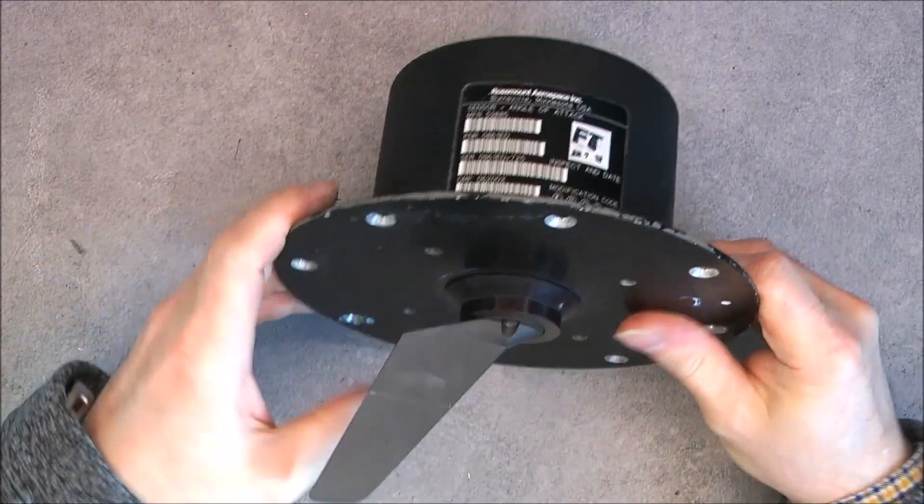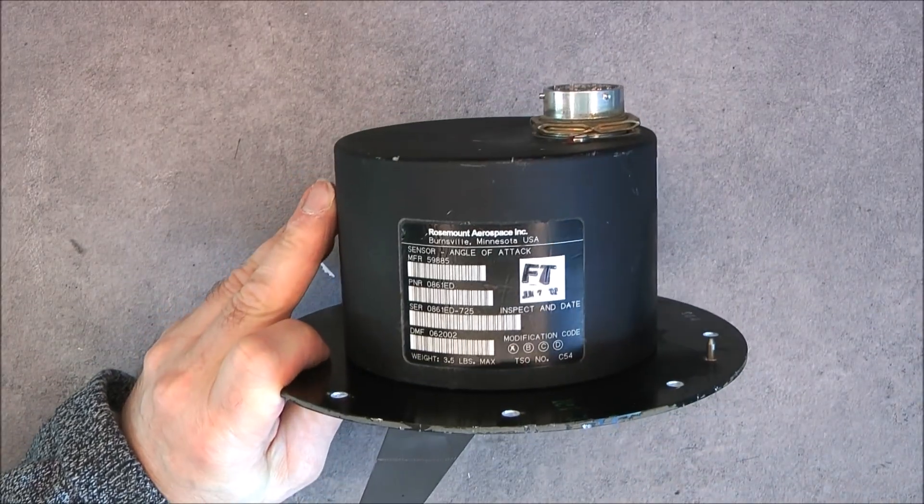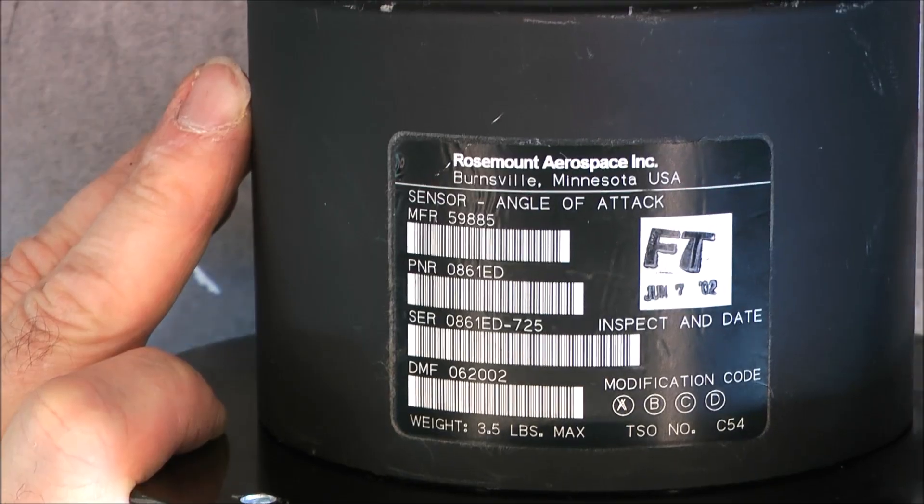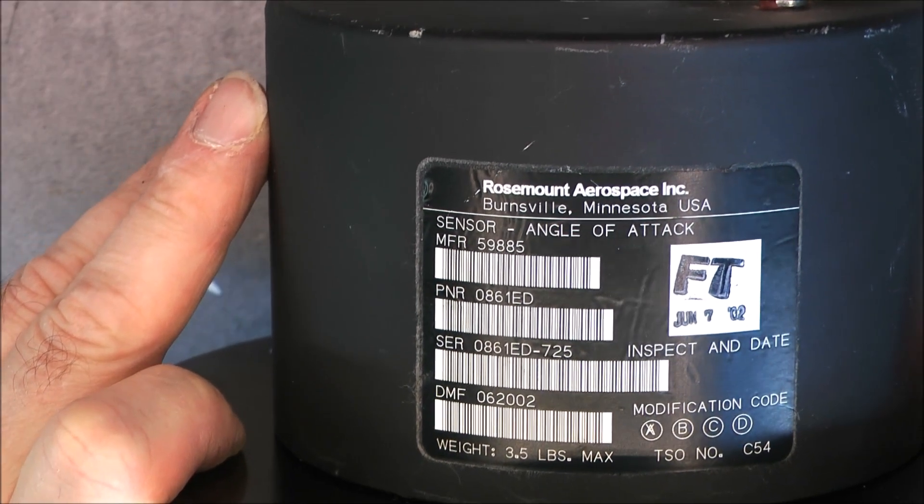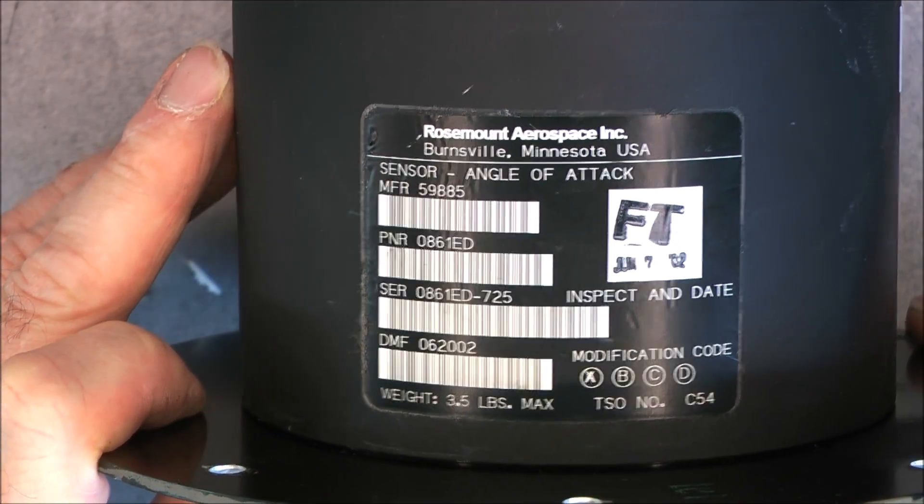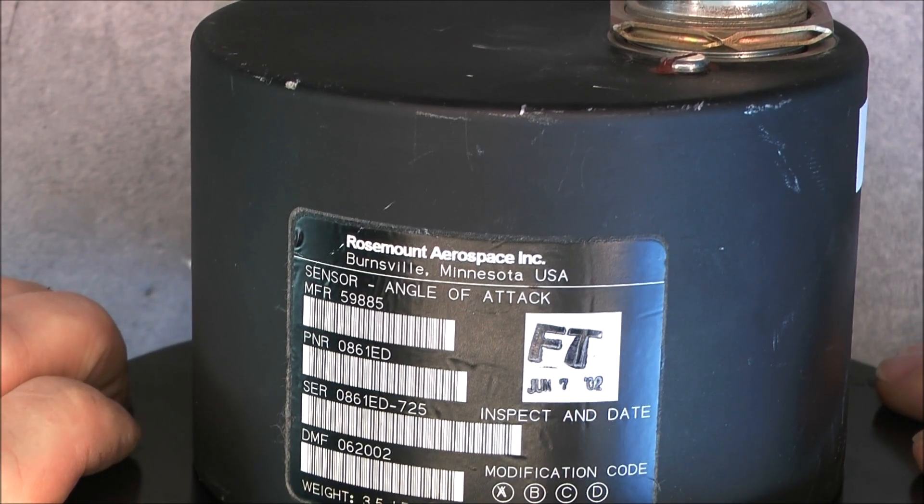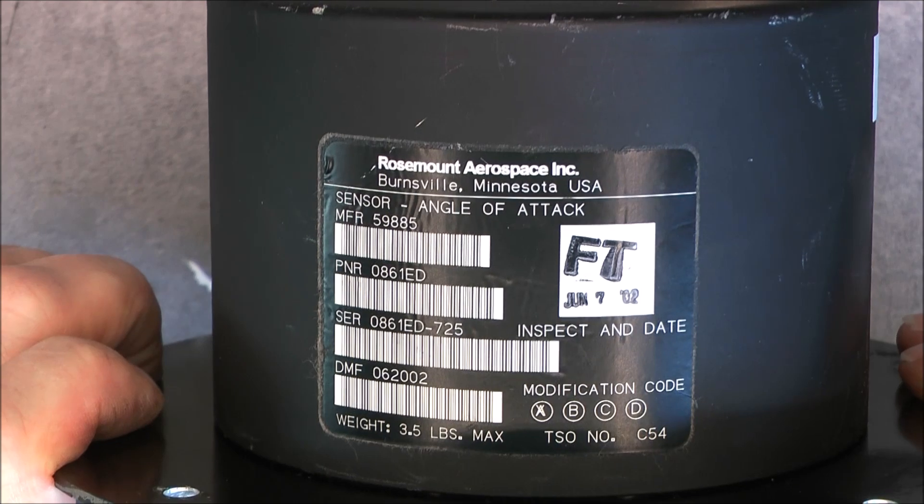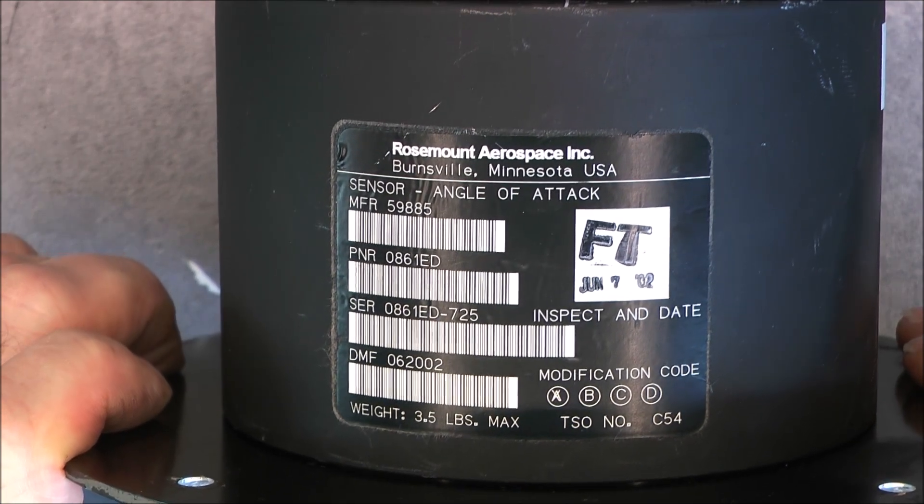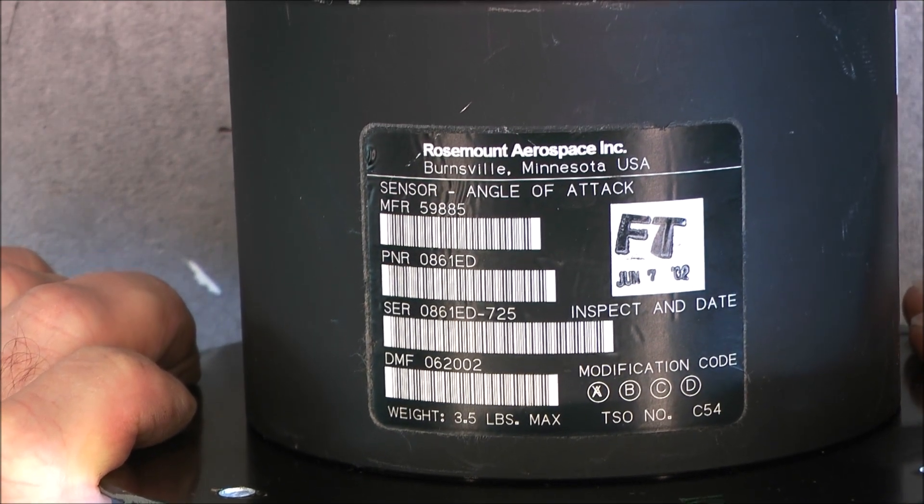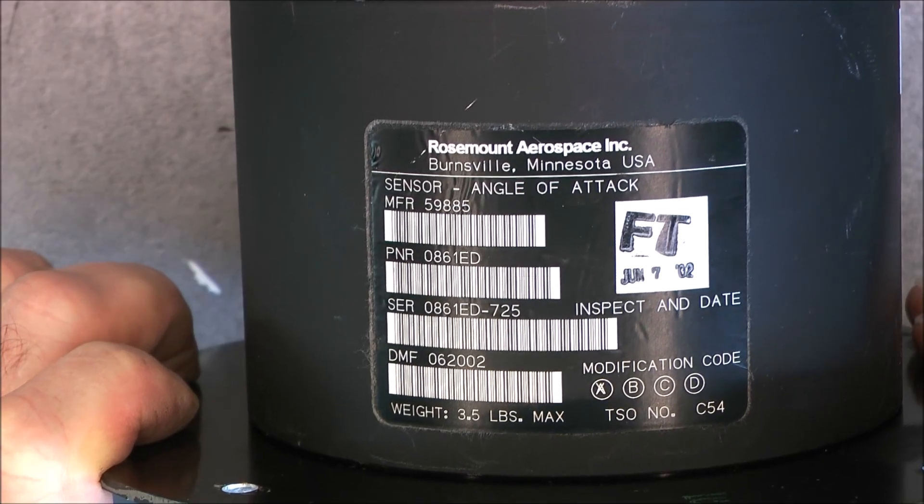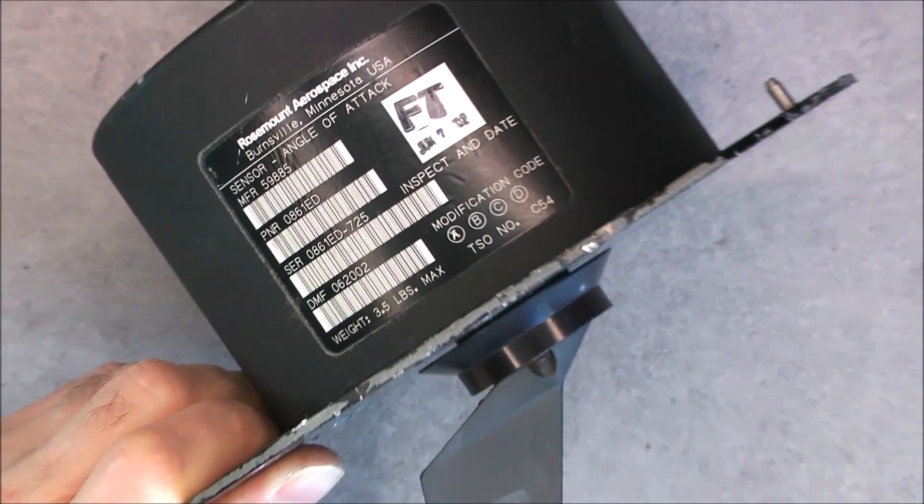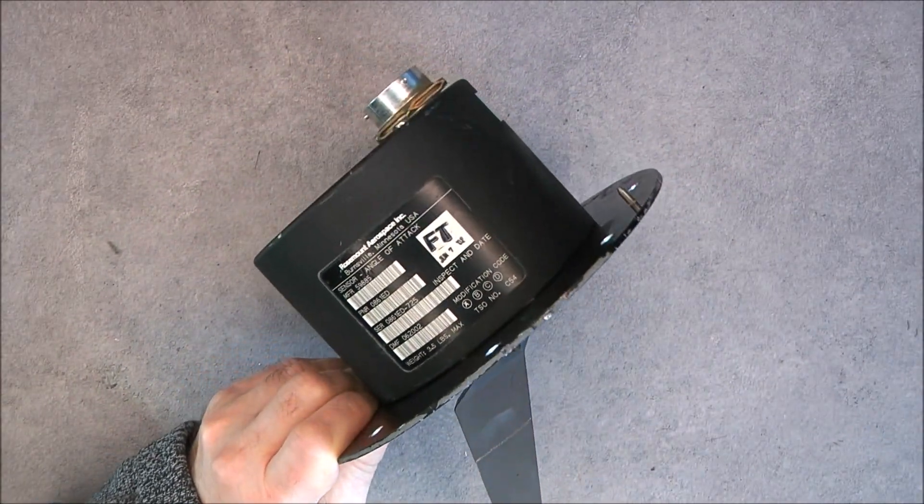So here is the manufacturer label for you of this device, so called part number 0861 ED. This model is from 2002, so probably the same batch as most of the ones involved in the crash, and quite modern equipment for me, in particular from an airliner, so quite nice.